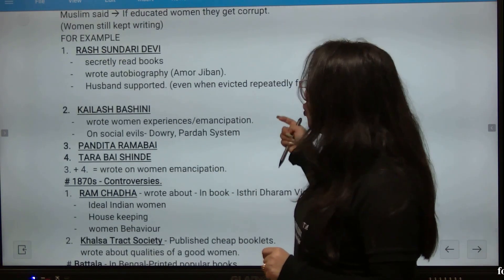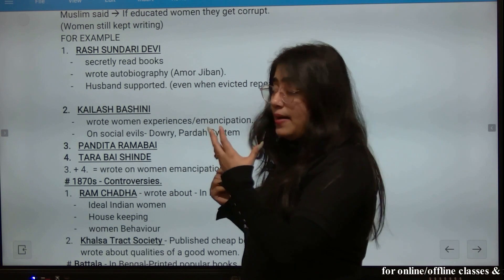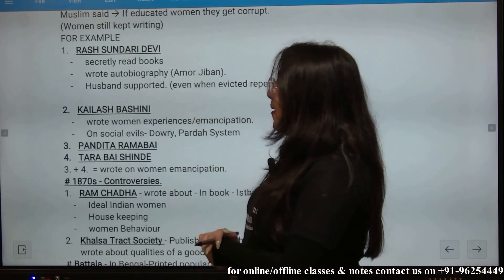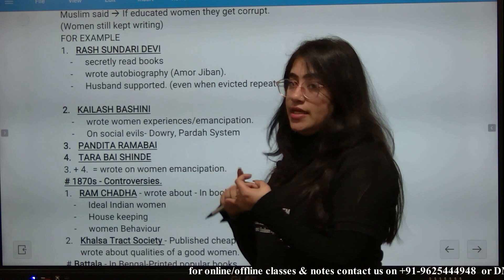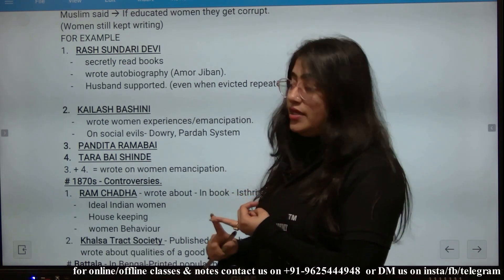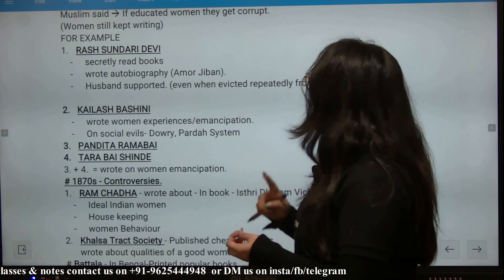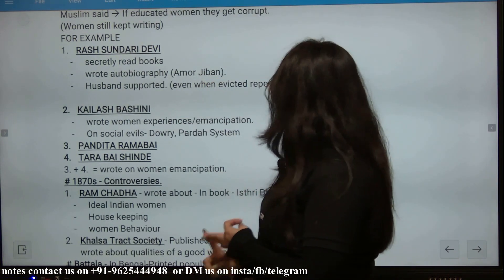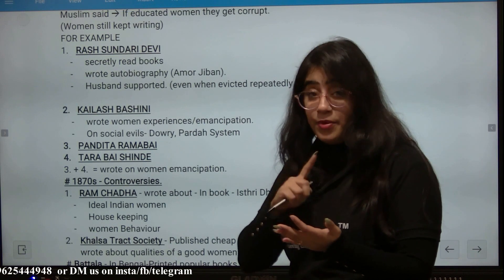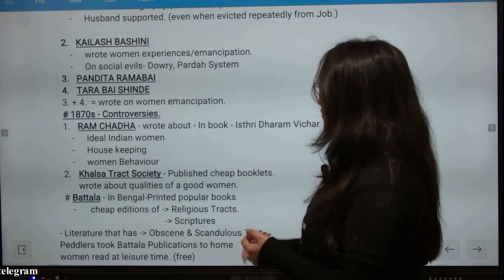There are some important examples. Rasundri Devi secretly read books and wrote an autobiography called Amar Jibban. Her husband supported her even though he was repeatedly evicted from his job for doing so.